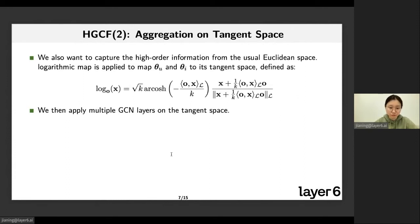Having embeddings defined on hyperbolic space allows us to learn and optimize from hyperbolic space. We also want to capture the high-order information from the usual Euclidean space. Conversely, in Riemannian manifolds, logarithmic map is another map we can utilize to project a point from the manifold to its tangent space, where we then apply multiple graph convolutional layers on the tangent space to extract high-order information from hops of neighbors on the user-item bipartite graph.